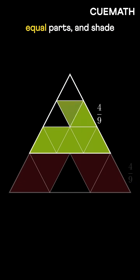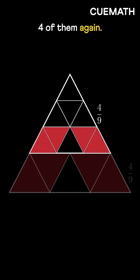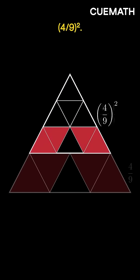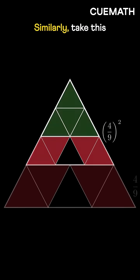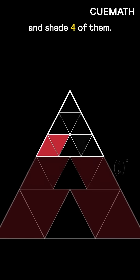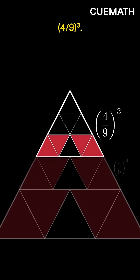Divide them into 9 equal parts and shade 4 of them again. The newly shaded area is 4 ninths of this total, which equals 4 ninths squared. Similarly, take this area, divide it into 9 parts again, and shade 4 of them. This time, the shaded area becomes 4 ninths cubed.